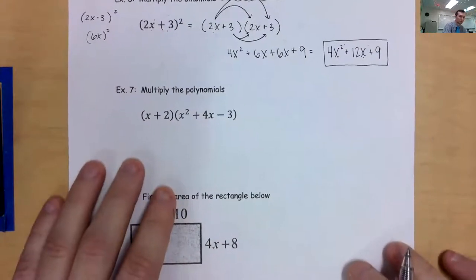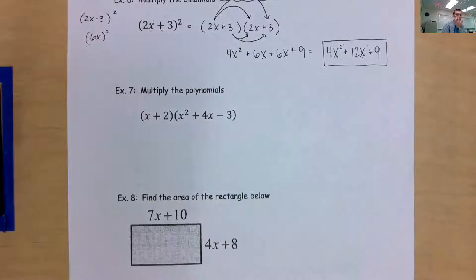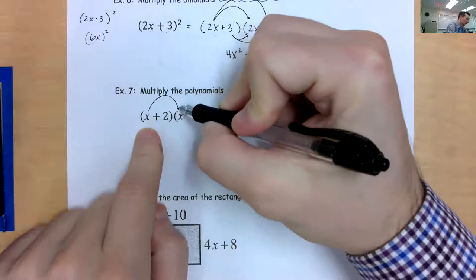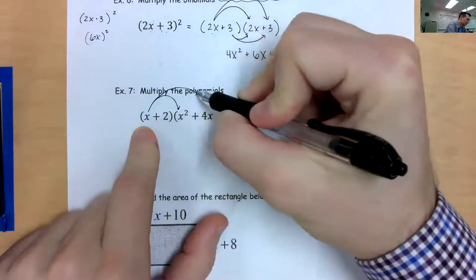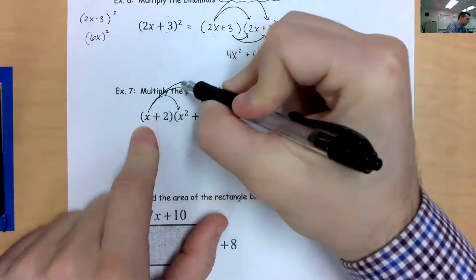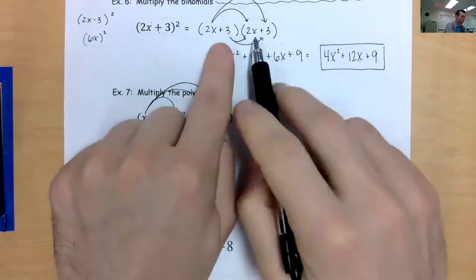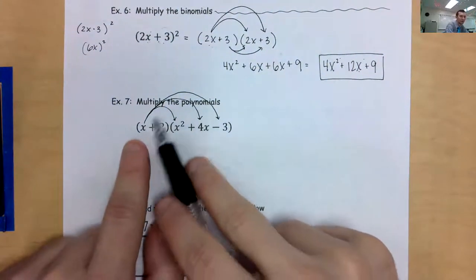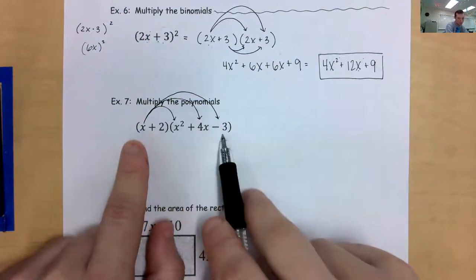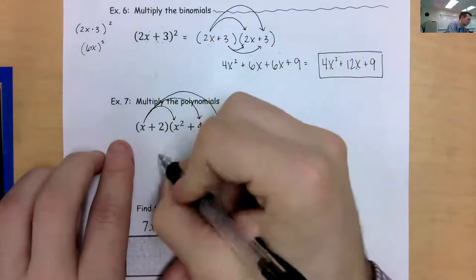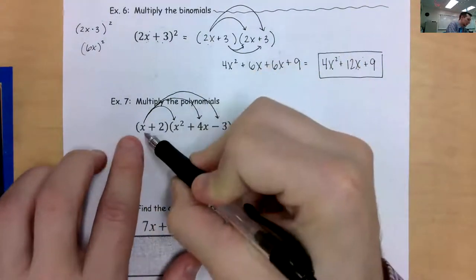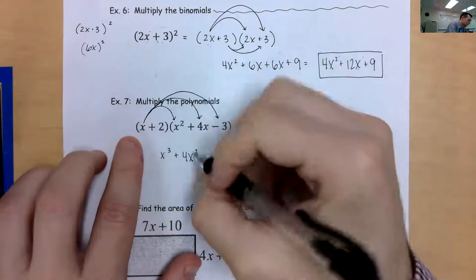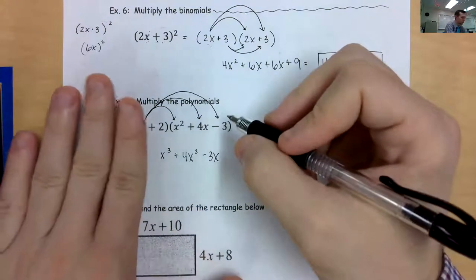Example 7 should actually be a quick change, because I've talked about this before. You are going to distribute this to everything — and everything now happens to be 3 terms. The only change from example 6 is that I actually have to distribute this x a third time. x times x squared is x cubed. x times 4x is 4x squared. x times negative 3 is negative 3x. I'm done distributing the x.